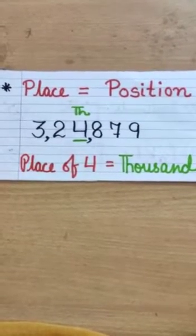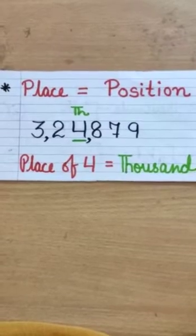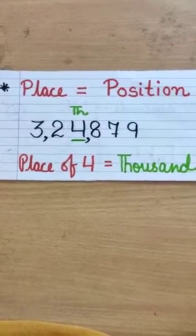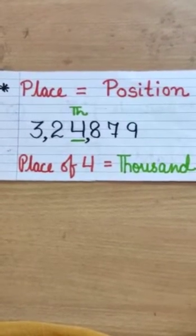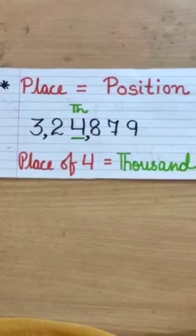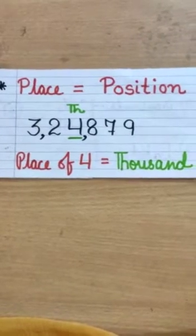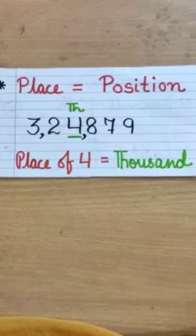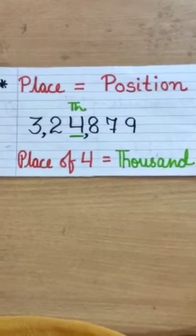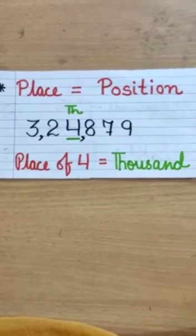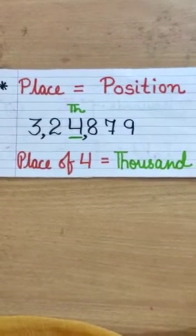Here also in mathematics, we are going to start the topic place. Place means that its position. Where does the number lie? Like in this number, can you read the number? The number is 3,24,879. I have underlined the number. It is 4. Can you just find what is the place of this 4?